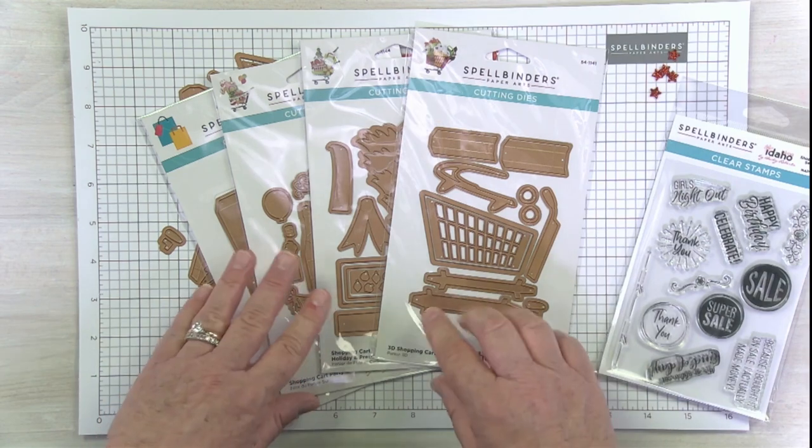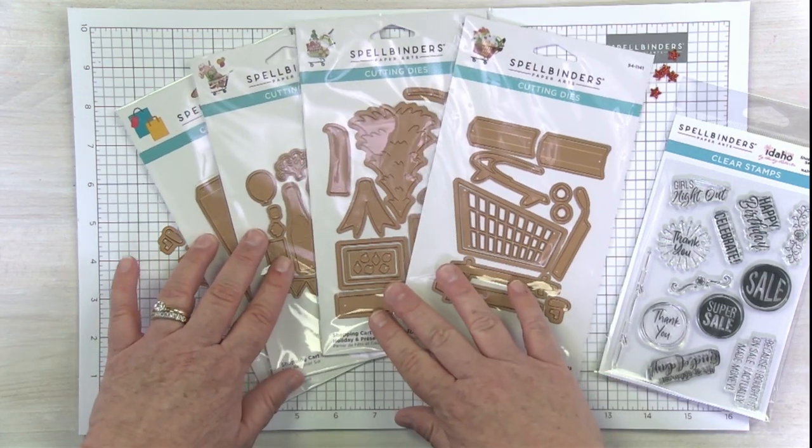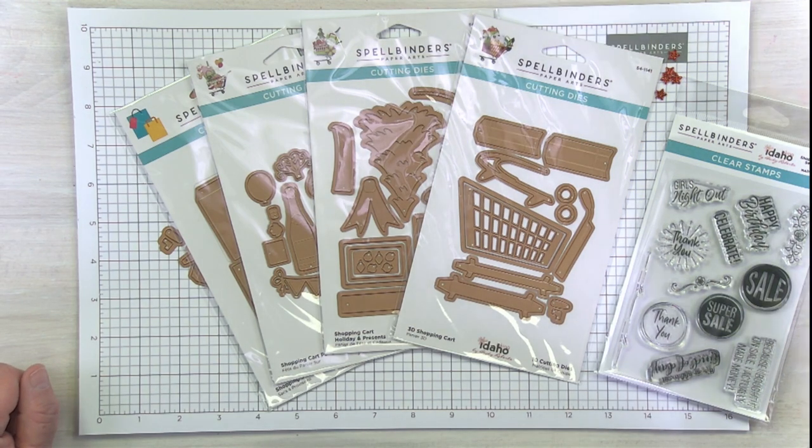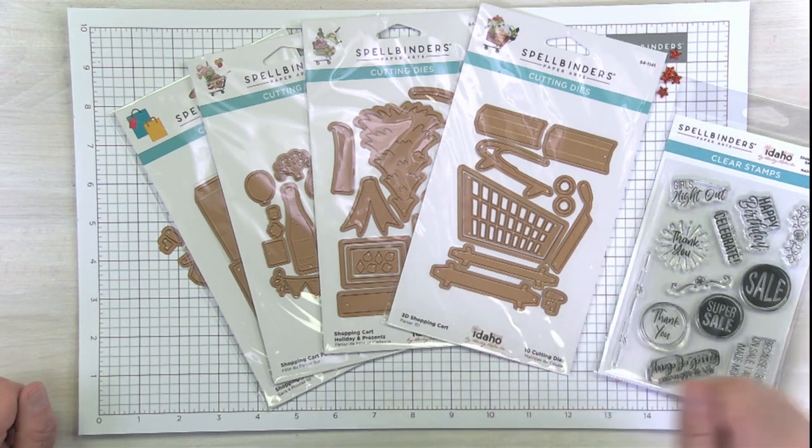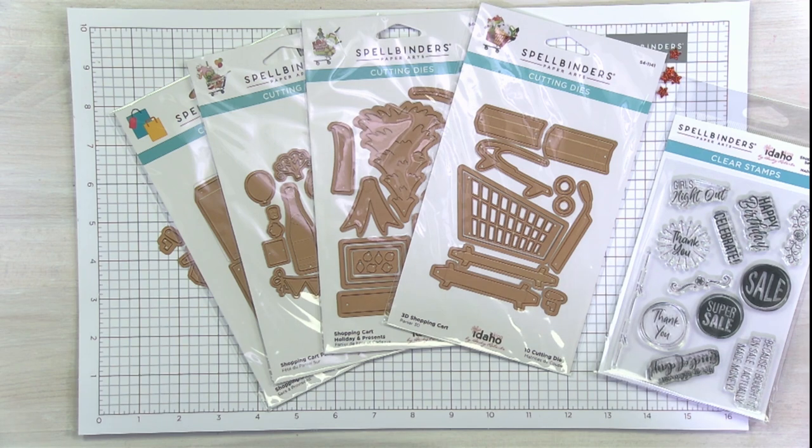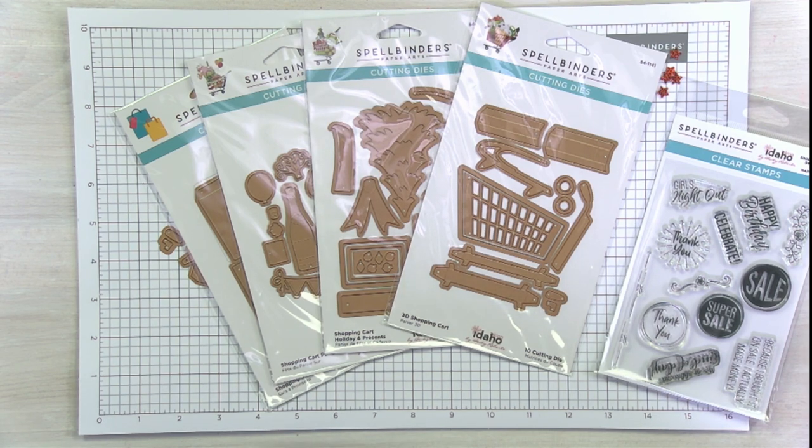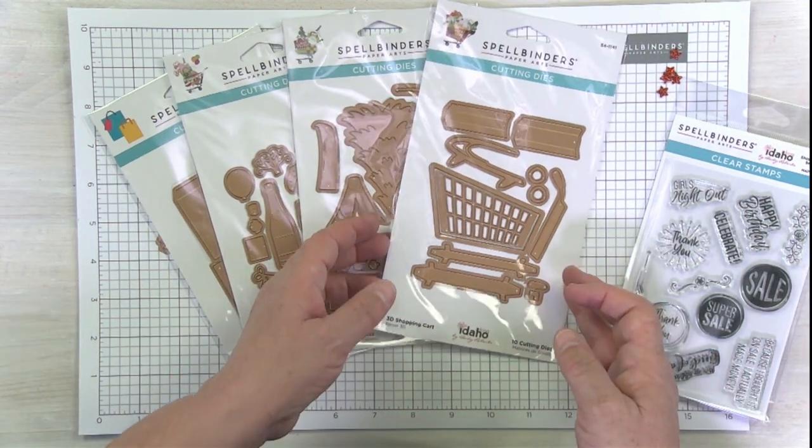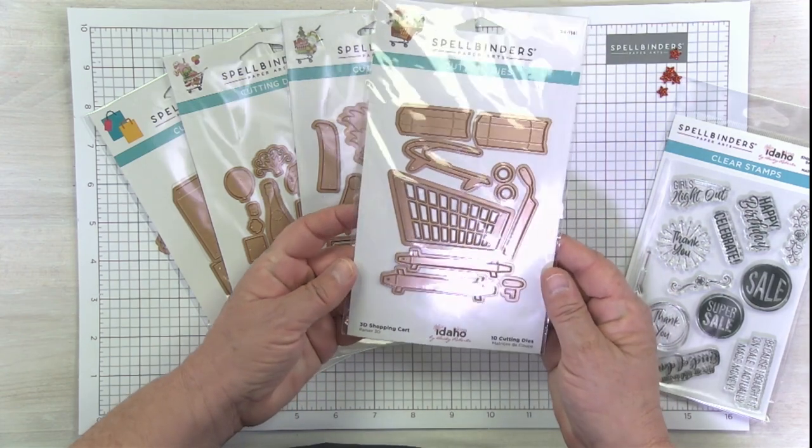It is called Add to Cart and is actually by one of our licensed designers, her name is Becky Roberts. If you're not familiar with Becky, her little channel is called Inking Idaho and you can find her on Instagram, Facebook, and all the good things. She has an amazing blog. She's not only a great paper crafter, she also does other really fun crafts too. Check out Becky Roberts. Becky's a big fan of shopping carts and has been since she was just a little girl.